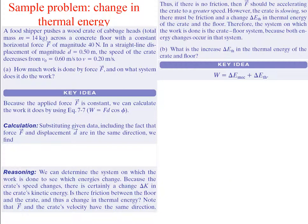Let's do an example problem looking at the change in thermal energy. A food chipper pushes a wood crate of cabbage heads with total mass of 14 kilograms across a concrete floor with a constant horizontal force of 40 newtons over a straight-line displacement of 0.5 meters. The speed of the crate decreases from 0.6 meters per second to 0.2 meters per second. How much work is done by the force, and on what system does it do work? Because the applied force is constant, we can calculate the work using our equation.